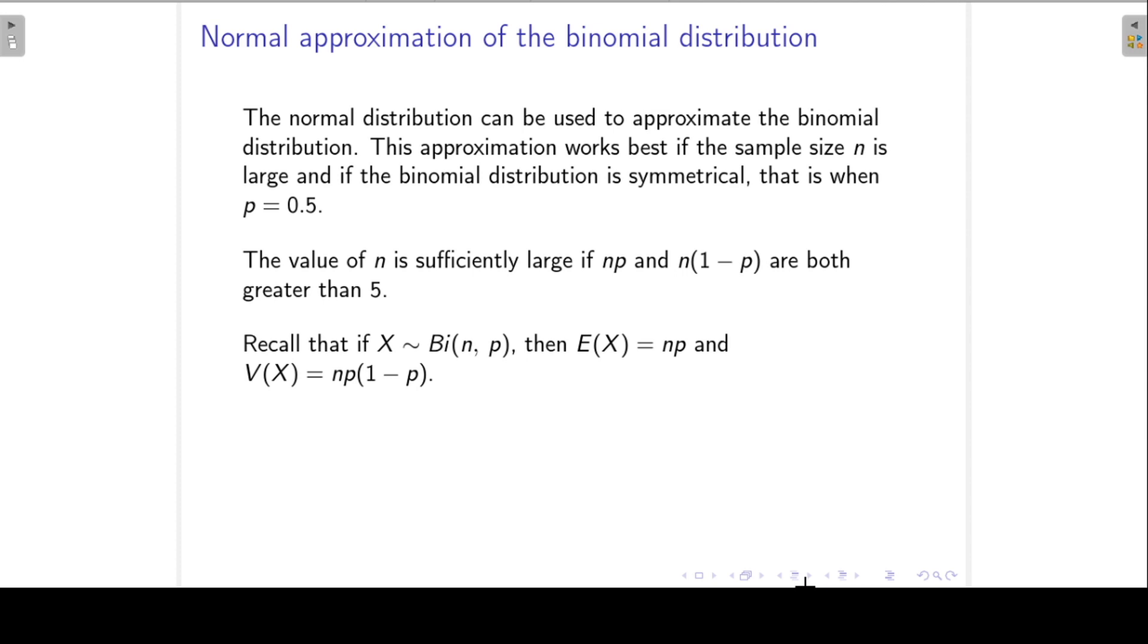Recall that if X follows the binomial distribution with parameters n and p, then the expected value of X is np and the variance of X is np(1-p).